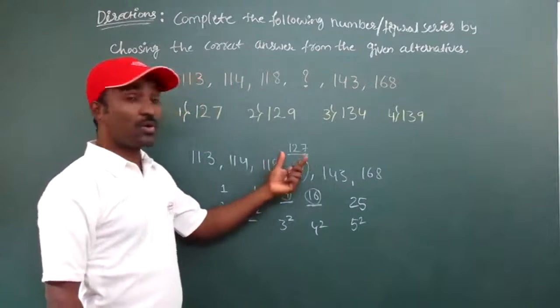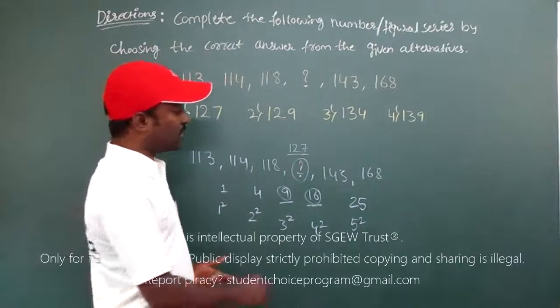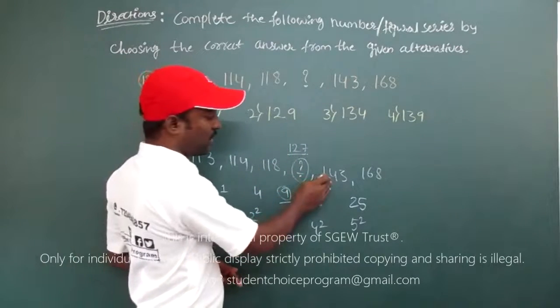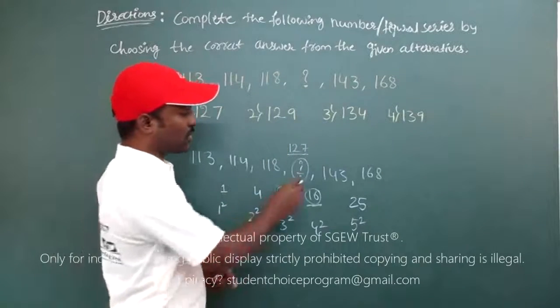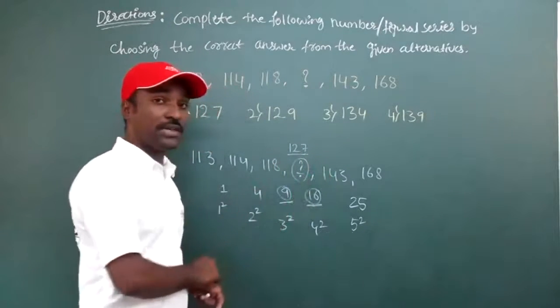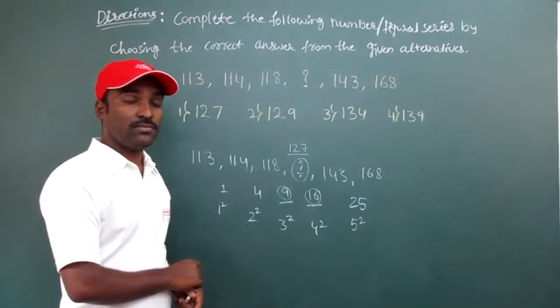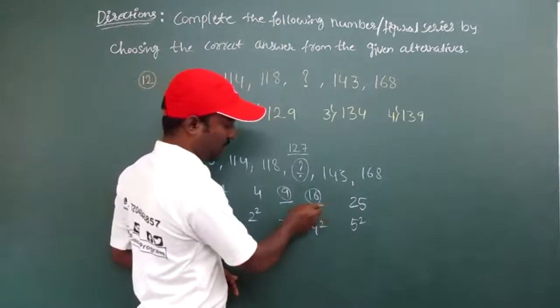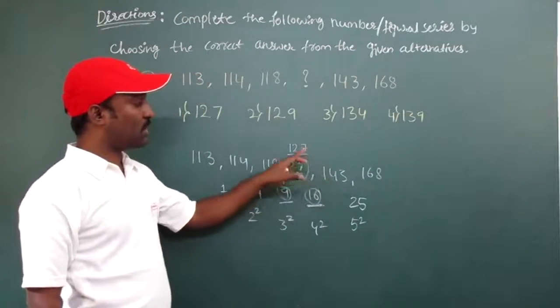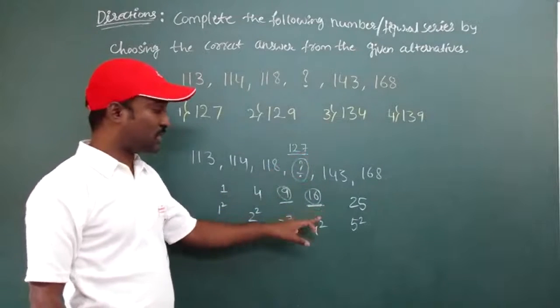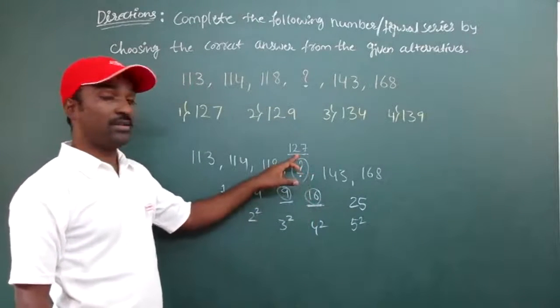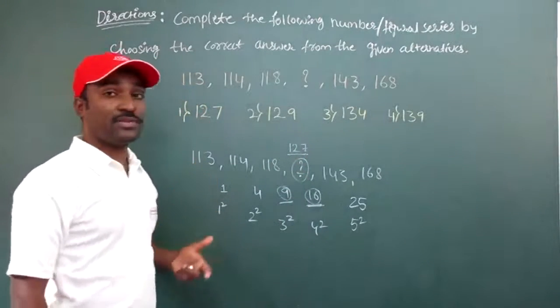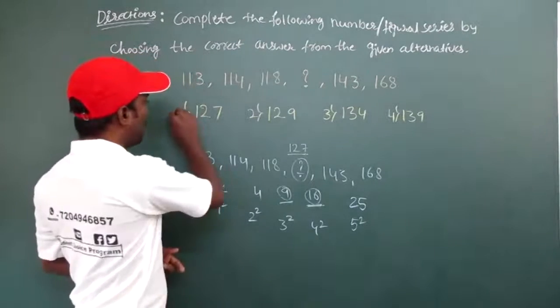Even you can go for cross checking. So if you take difference between 143 and 127, what is 143 minus 127? Is it 16? Yes, it is there. 143 minus 127 will give me 16. So that says the 127 that we obtain is the right number. So go to option, and first option itself is having 127. So first option is the right option.